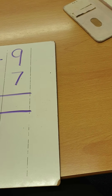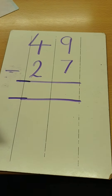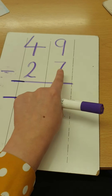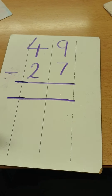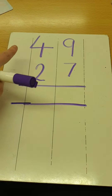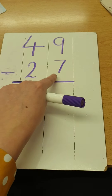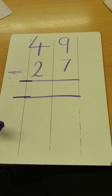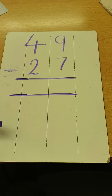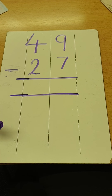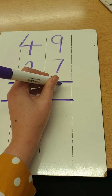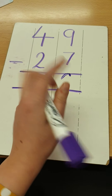Let's have one more go together on this tricky sum. I've got 49, which is four tens and nine ones, take away 27, which is two tens and seven ones. What part do we do first? Excellent — we do the ones part first. Is it the four tens and two tens that are ones, or is it the nine ones and the seven ones? It is nine ones take away seven ones. The answer is two, written in the ones column.